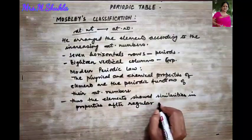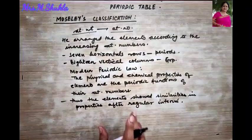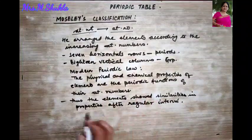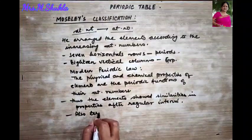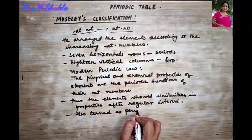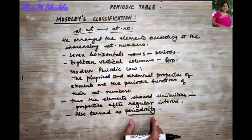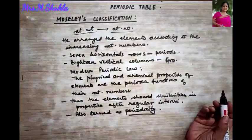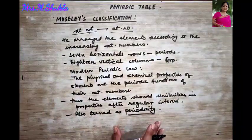This regular recurrence of similar properties after a regular interval is termed as periodicity. So when elements show similar properties after a regular interval, that is termed as periodicity.